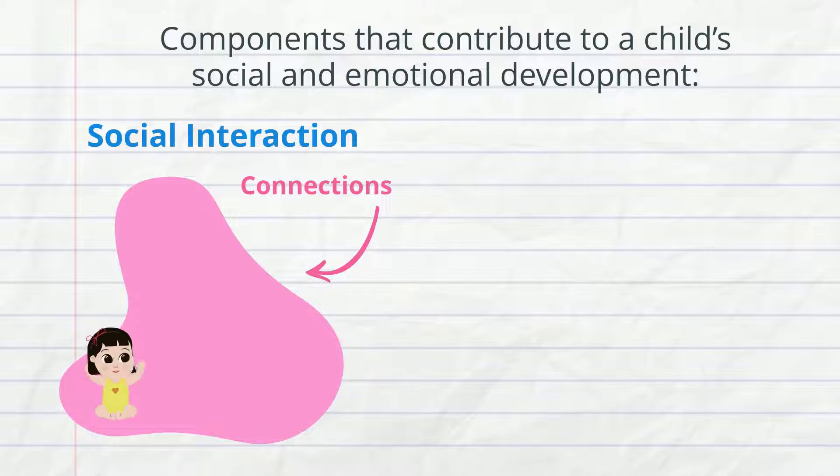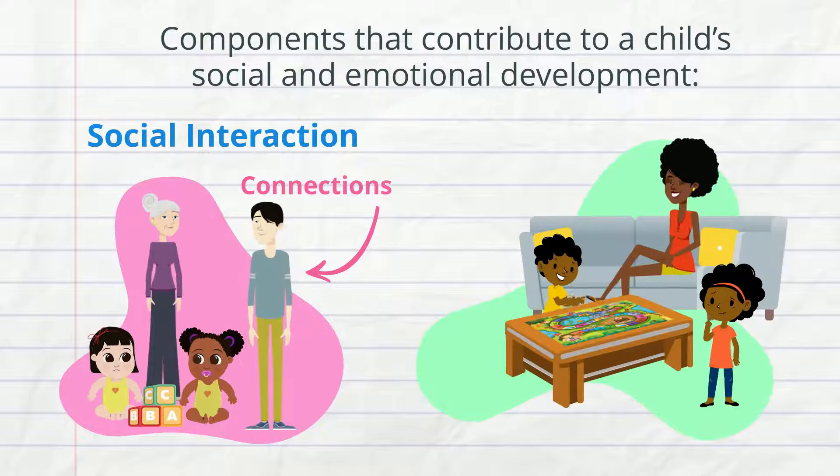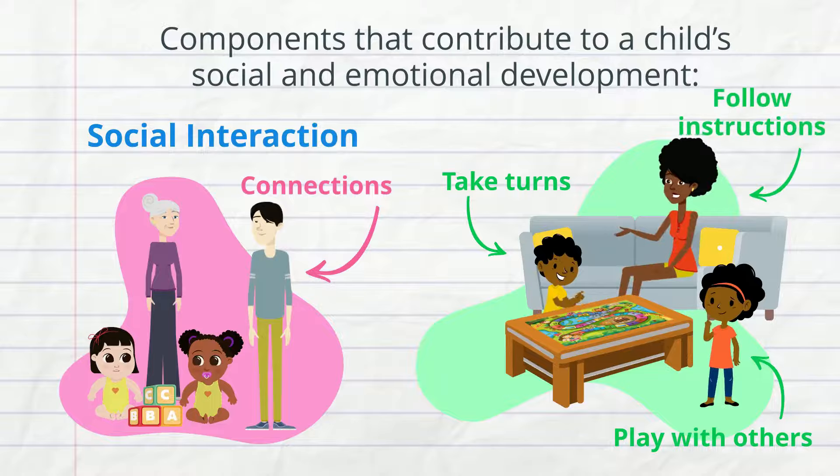Social interaction – the connections children form with others, including caregivers, family, and peers. A young child's social skills show in their ability to take turns, play with others, and follow simple instructions.